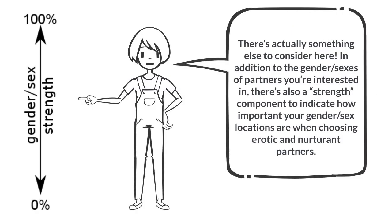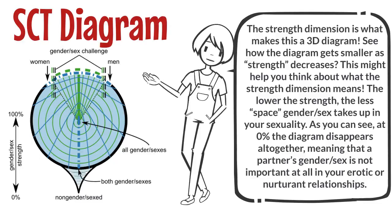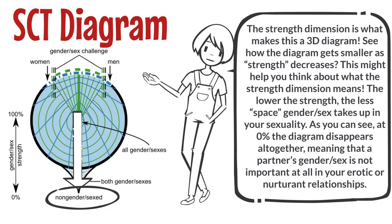In addition to the gender sexes of partners you're interested in, there's also a strength component to indicate how important your gender sex locations are when choosing erotic and nurturant partners. The strength dimension is what makes this a 3D diagram. See how the diagram gets smaller as strength decreases? The lower the strength, the less space gender sex takes up in your sexuality. At zero percent the diagram disappears altogether, meaning that a partner's gender sex is not important at all in your erotic or nurturant relationships.